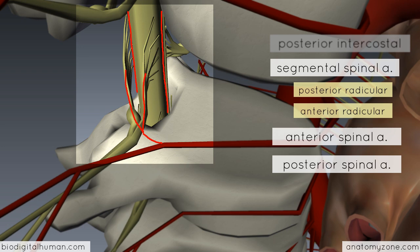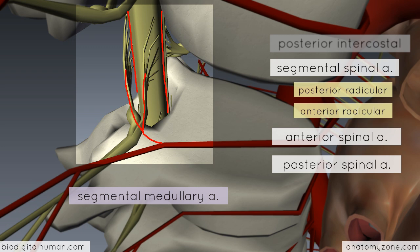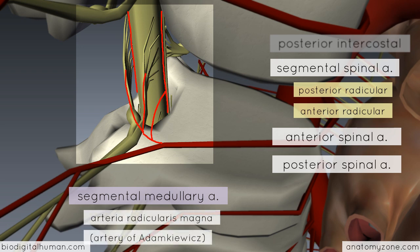At some vertebral levels there is an additional branch called the segmental medullary artery, which comes off the segmental spinal artery and directly joins the descending vertical arteries — the anterior and posterior spinal arteries. This doesn't happen at every spinal level, but it acts to reinforce the blood supply provided by the vertical descending arteries. Notably, the largest segmental medullary artery is known as the arteria radicularis magna — the great radicular artery — which arises in the lower thoracic and upper lumbar regions and reinforces blood supply to the distal parts of the spinal cord.